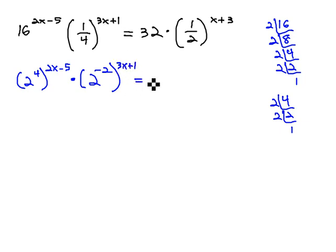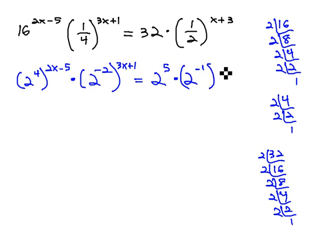Equals 32. Well, 32 factoring, divide by 2 is 16, divide by 2 is 8, divide by 2 is 4, divide by 2 is 2, divide by 2 is 1. We've got 5 2's, 32 is 2 to the 5th power, times 1 half. Well, 2's already prime, but we need the fraction, make it a negative exponent to the x plus 3.